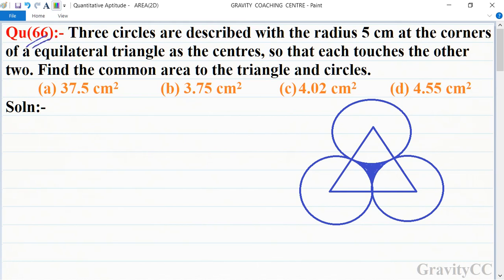Question number 66: Three circles are described with the radius 5 centimeter at the corners of an equilateral triangle as the center, so that each touches the other two. Find the common area of the triangles and circles.